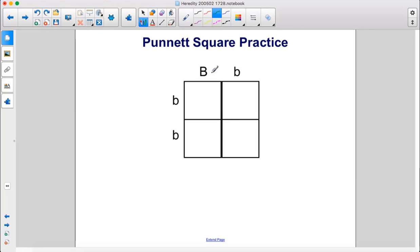So here is our Punnett Square. We have capital B lowercase b, lowercase b lowercase b, capital B lowercase b, and lowercase b lowercase b.